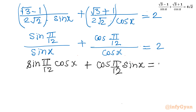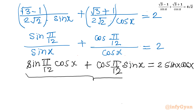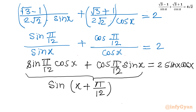The right-hand side becomes 2 sin x cos x. Now the left-hand side has the form sin A cos B + cos A sin B, which equals sin(A + B). So LHS = sin(π/12 + x). The right-hand side 2 sin x cos x equals sin(2x). So our equation is sin(x + π/12) = sin(2x).